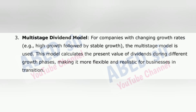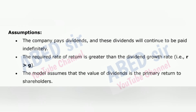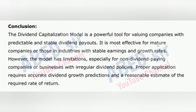This model is ideal for mature companies with stable growth rates. 3. Multistage dividend model: for companies with changing growth rates — for example, high growth followed by stable growth — the multistage model is used. This model calculates the present value of dividends during different growth phases, making it more flexible and realistic for businesses in transition. Assumptions: the company pays dividends that will continue indefinitely; the required rate of return R is greater than the dividend growth rate G.